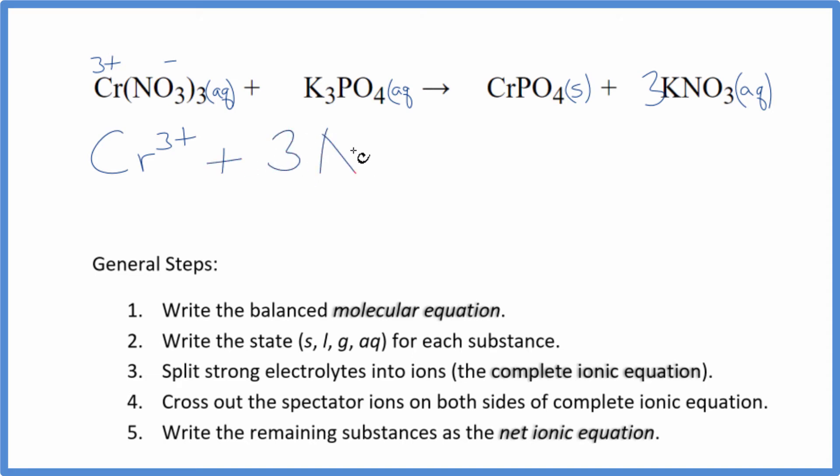So we have three of those nitrate ions plus potassium group one. That's one plus. The whole phosphate, three minus. So we have three potassium ions plus our phosphate ion here.